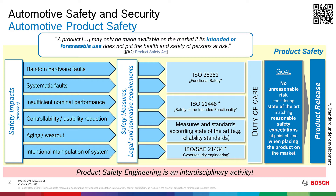Automotive product safety is a very huge issue. There are a lot of safety impacts — failures which could influence the safety of the product. For example, random hardware faults or systematic faults, and also the intended manipulation of the system. For all these safety impacts we have different measures and standards: the ISO 26262 for functional safety, the ISO 21448 for the safety of the intended functionality, and the ISO SAE 21434 for cybersecurity engineering.